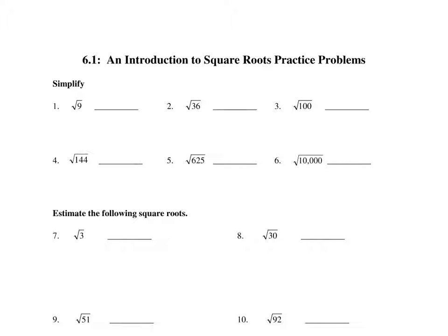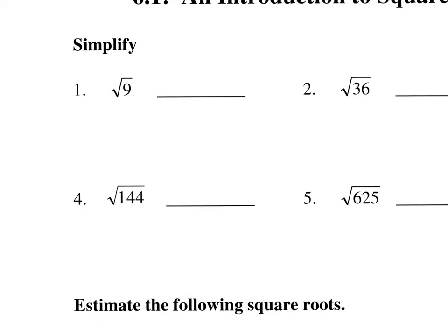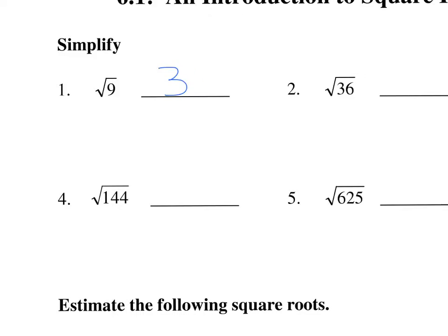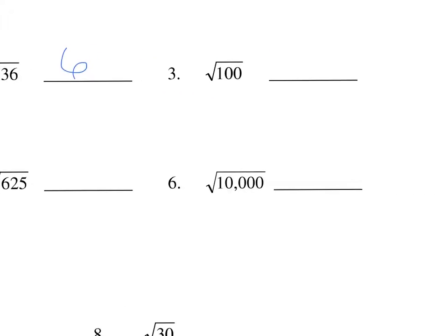We're going to start with some perfect squares. We went through a list of the perfect squares in the lecture, so you're really just identifying what number, when multiplied times itself, equals the radicand. In this case 9 — what number times itself equals 9? That would be 3. The square root of 36 is 6, because 6 times 6 makes 36. The square root of 100 is 10; 10 times 10 makes 100.